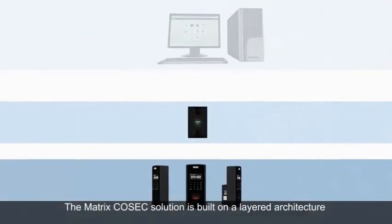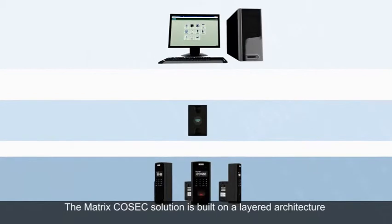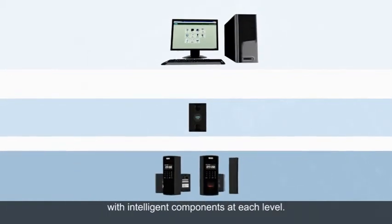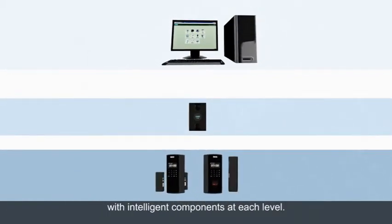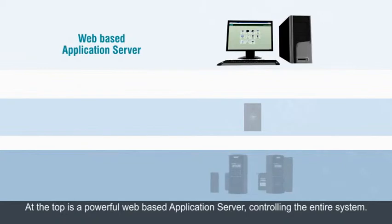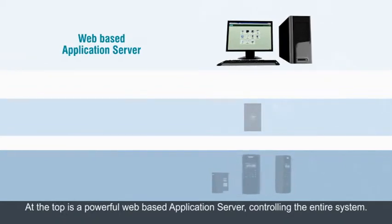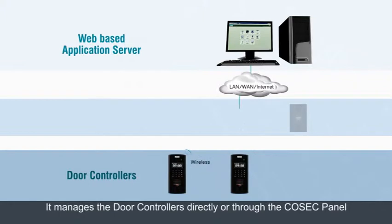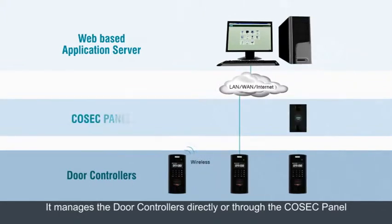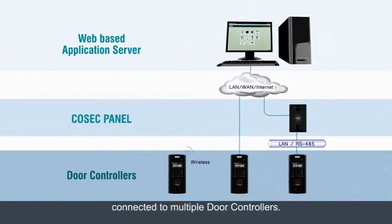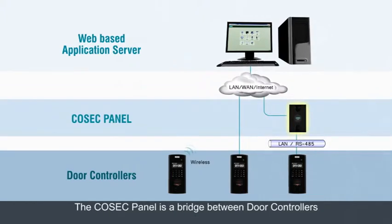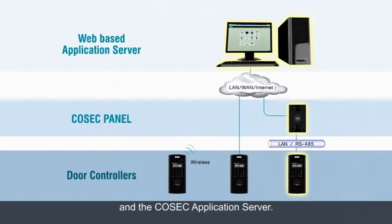The Matrix Cosec solution is built on a layered architecture with intelligent components at each level. At the top is a powerful web-based application server controlling the entire system. It manages the door controllers directly or through the Cosec panel connected to multiple door controllers. The Cosec panel is a bridge between the door controllers and the Cosec application server.